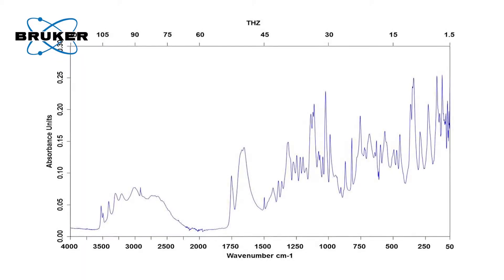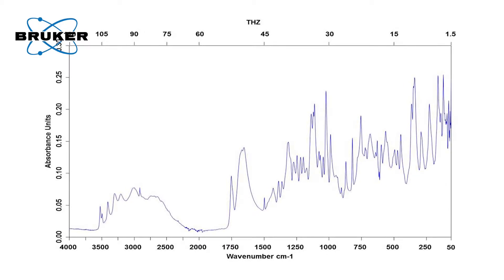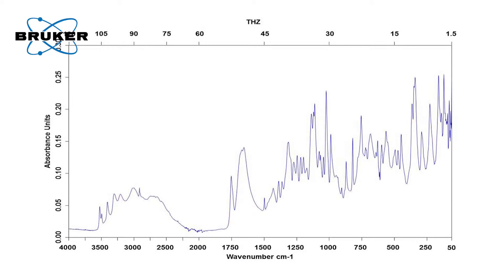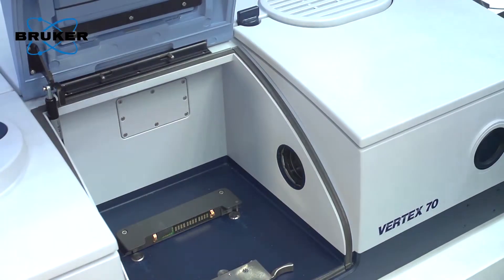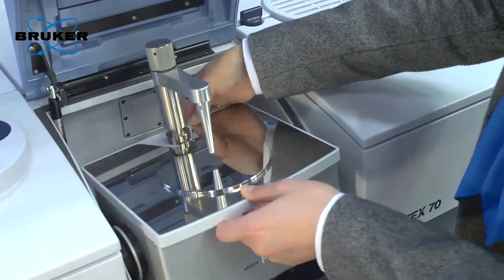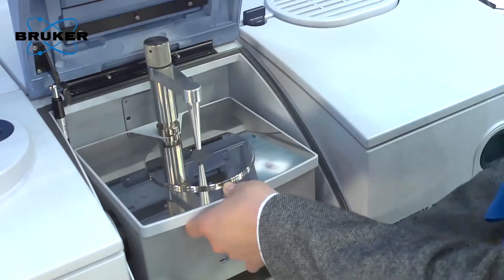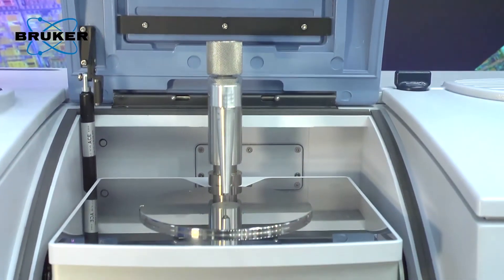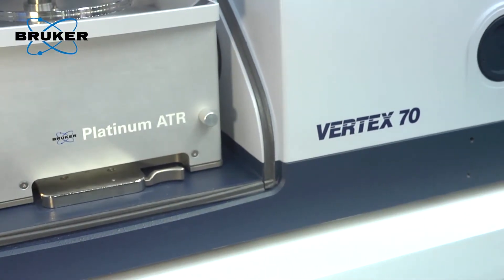Here is an ATR result spectrum for ascorbic acid powder measured with the Vertex 70V spectrometer and platinum ATR unit. The Vertex spectrometer is equipped with this new beam splitter and wide range DTGS detector. In a single data acquisition, we have the whole spectrum range from 4,000 to 30 wavenumber.